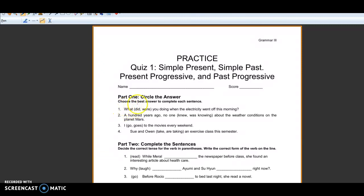So the first question we have to circle the best answer to complete each sentence, and it says what did or were you doing when the electricity went off this morning? So here we see that we have a you subject and we have doing, so we know that's a progressive verb. Something was in progress in a certain moment when the electricity went off, simple past. So to go with the ing verb we must have a be verb, so we have to choose a word that's a past progressive or past continuous tense.